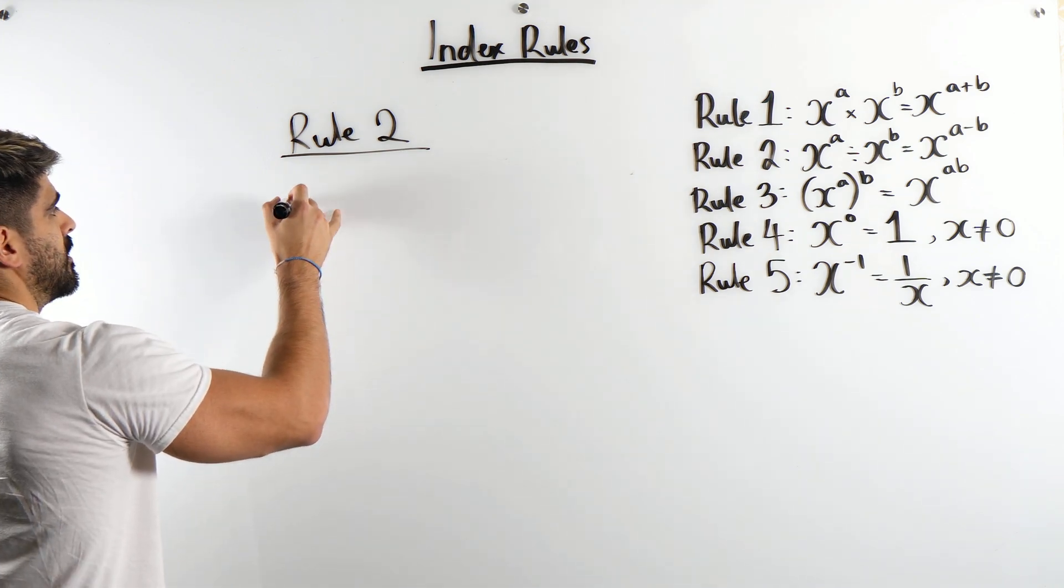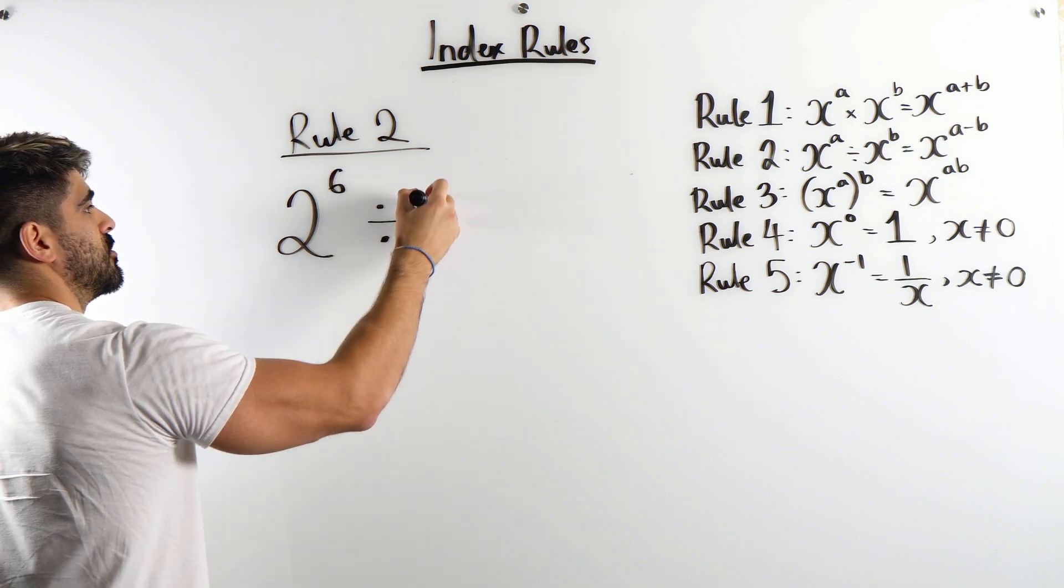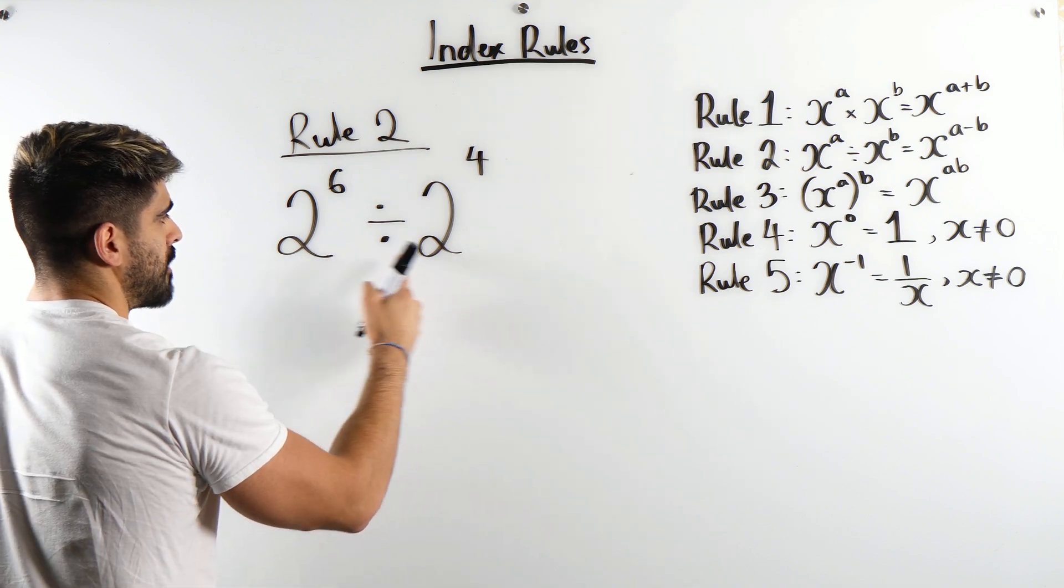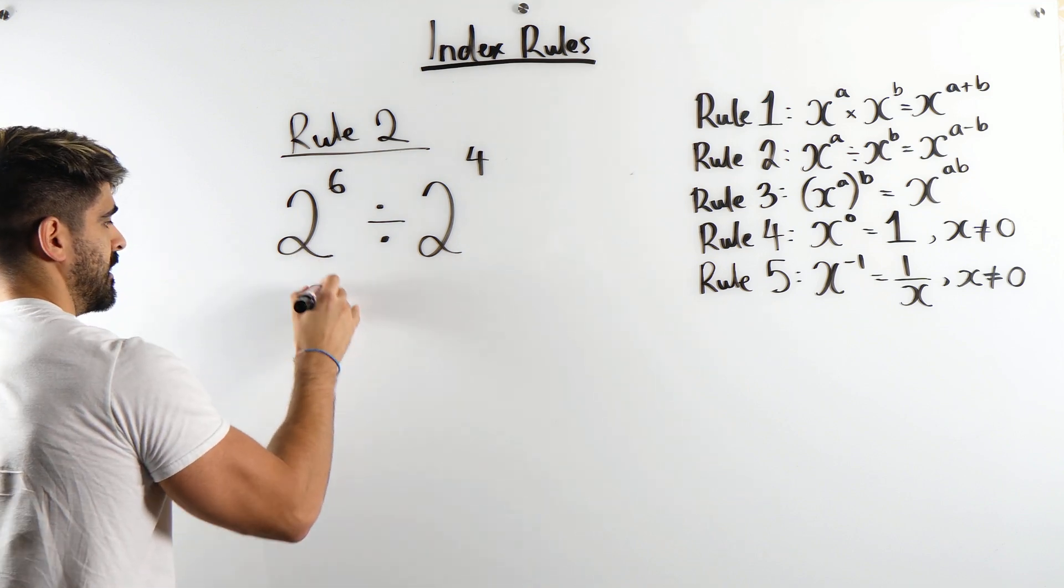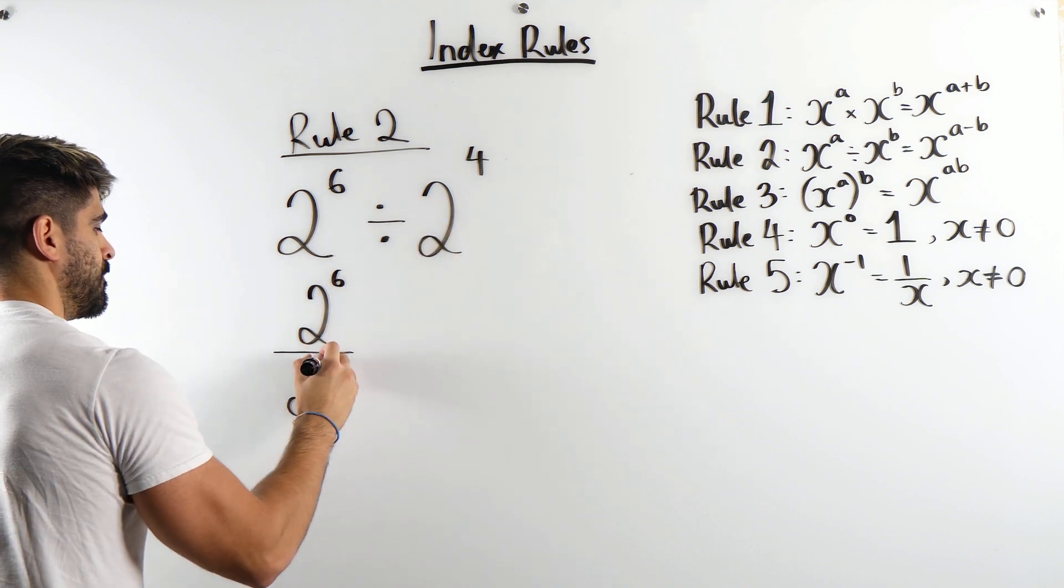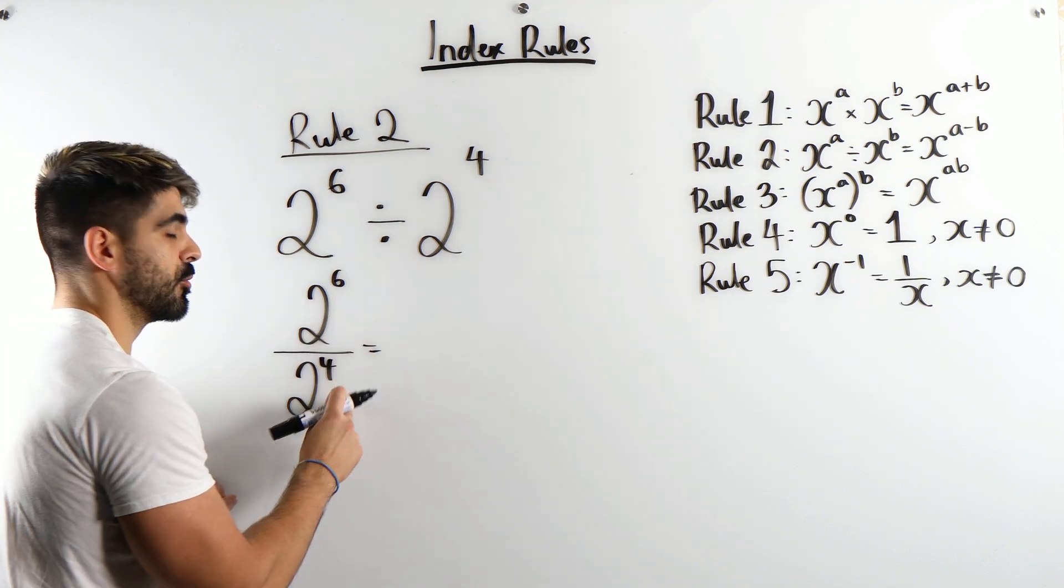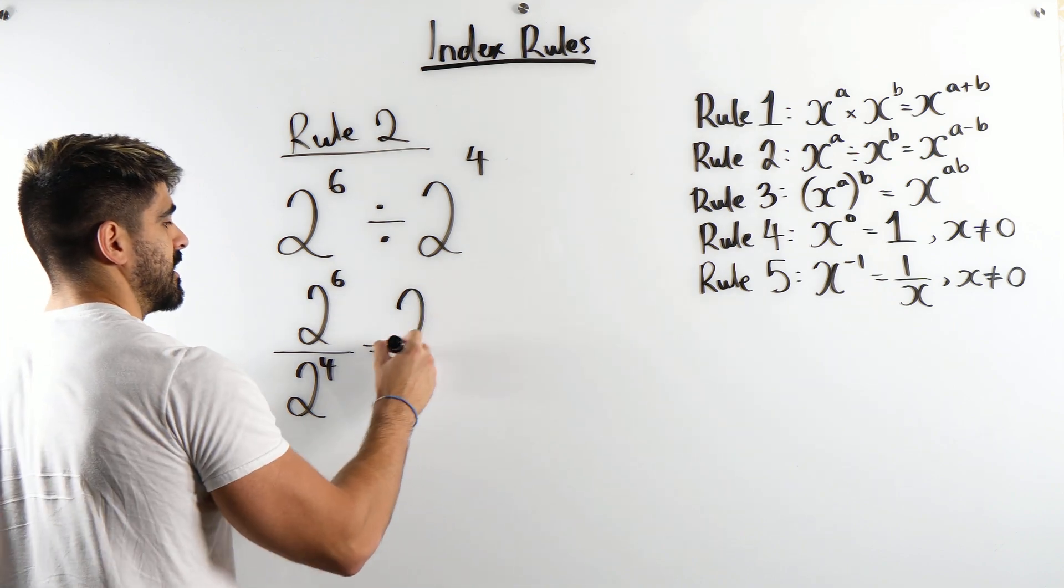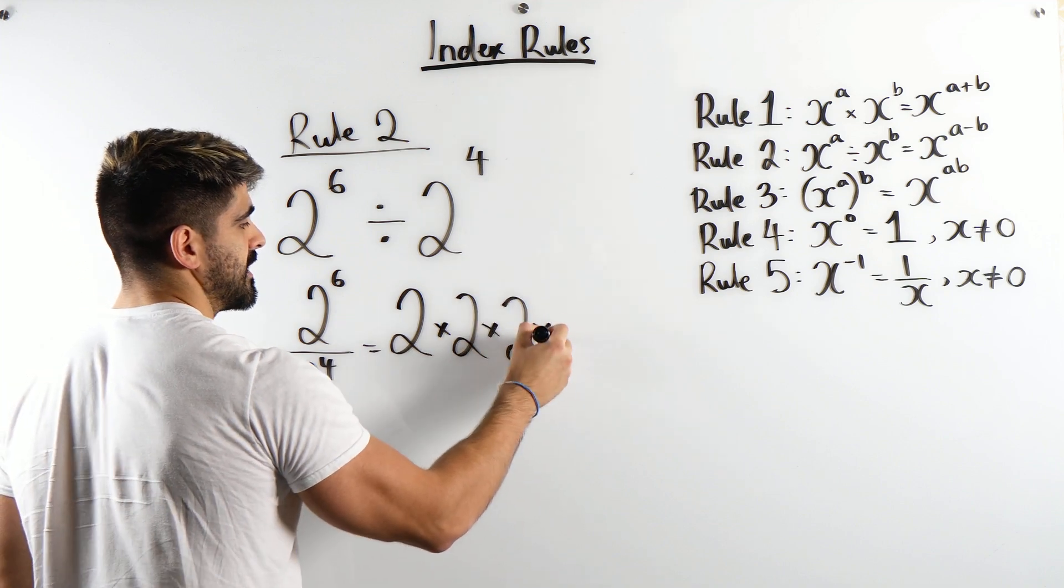So let's take a look at 2 to the power of 6 divided by 2 to the power of 4. We're dividing two numbers with the same base. So we're doing 2 to the power of 6 divided by 2 to the power of 4. Now, we should know what the answer is going to be. We're going to do 6 minus 4 which is 2.